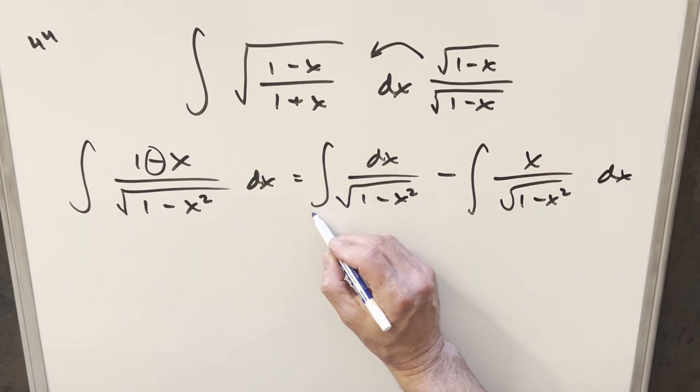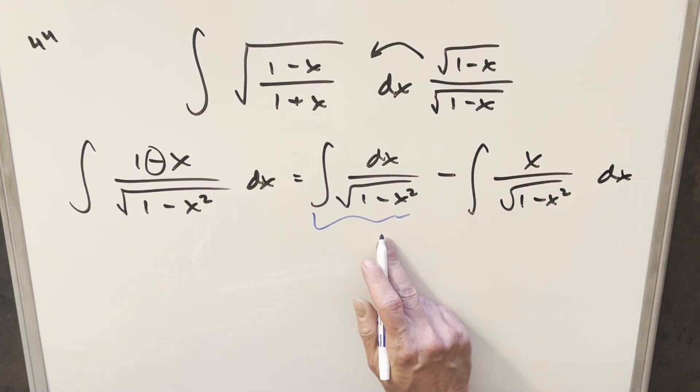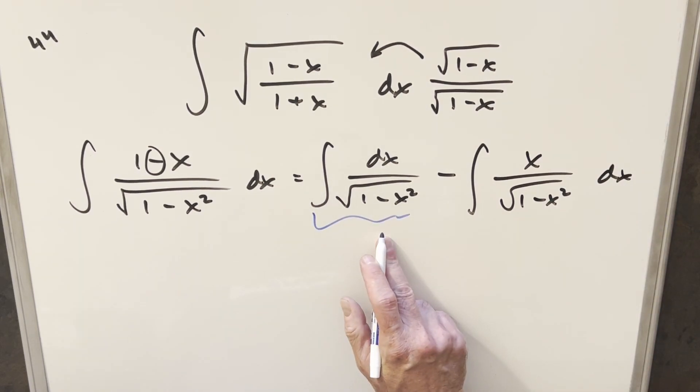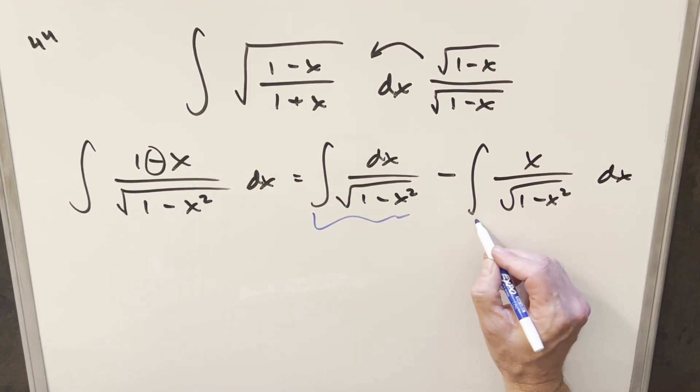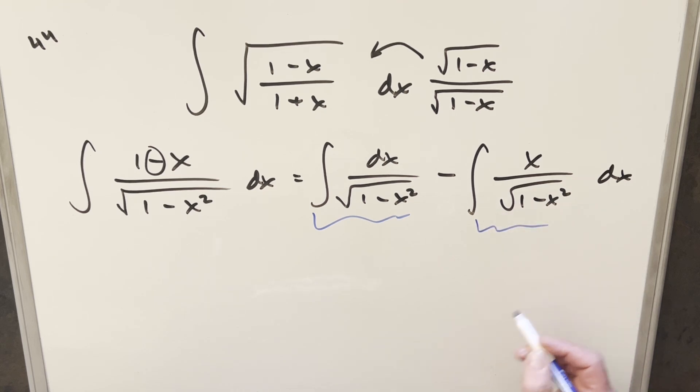We just have a formula for the first one — this is going to be arc sine. And for the second one, we can set up a u-substitution.